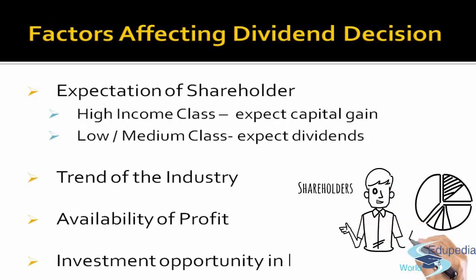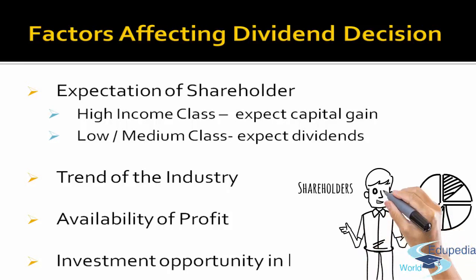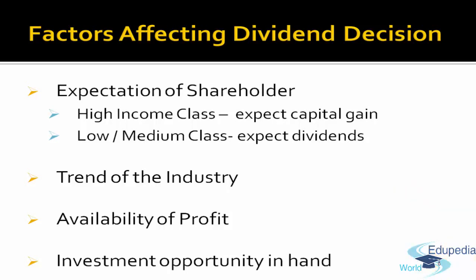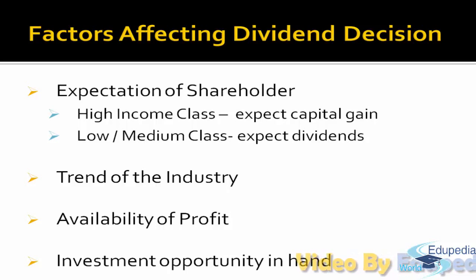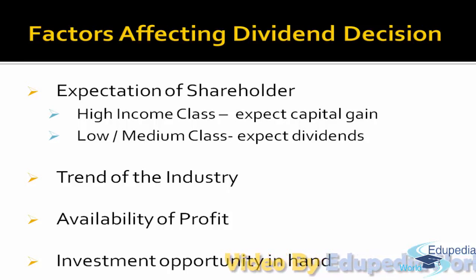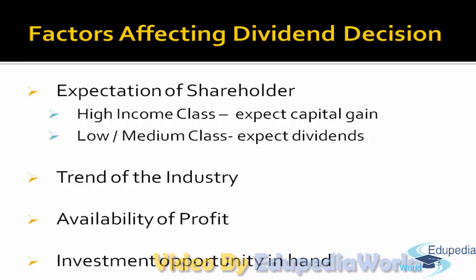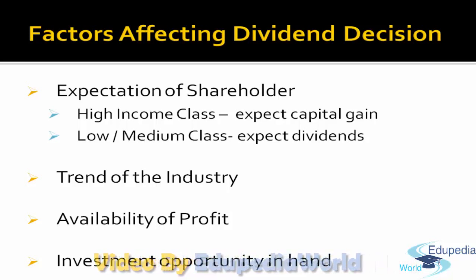There are various factors which affect a financial manager's Dividend Decision. One factor is the expectation of the shareholder. This is very subjective because a shareholder could be from a low, medium, or high income class. A high income class shareholder will expect appreciation in the price of shares — that is, more of a capital gain income. A regular income is not expected by a high income class category.